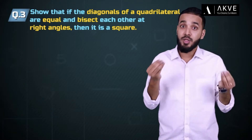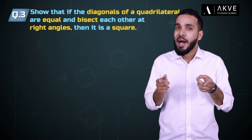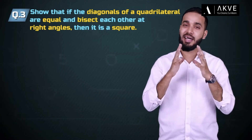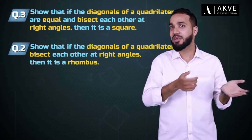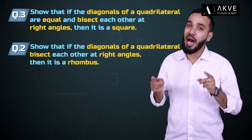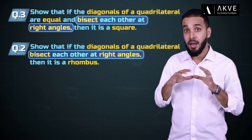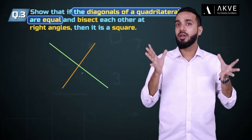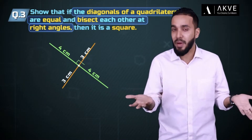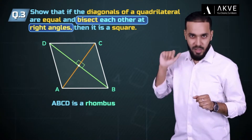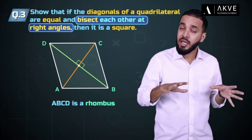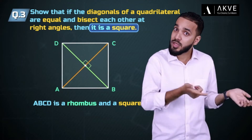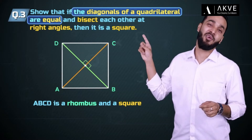This one asks us to show that if the diagonals of a quadrilateral are equal and they bisect each other at right angles, then it is a square. This one is basically an upgrade from the previous question — the diagonals are bisecting each other at right angles, but additionally they are also equal. We have already proved that such a quadrilateral is a rhombus, but the question asks us to prove it is a square.